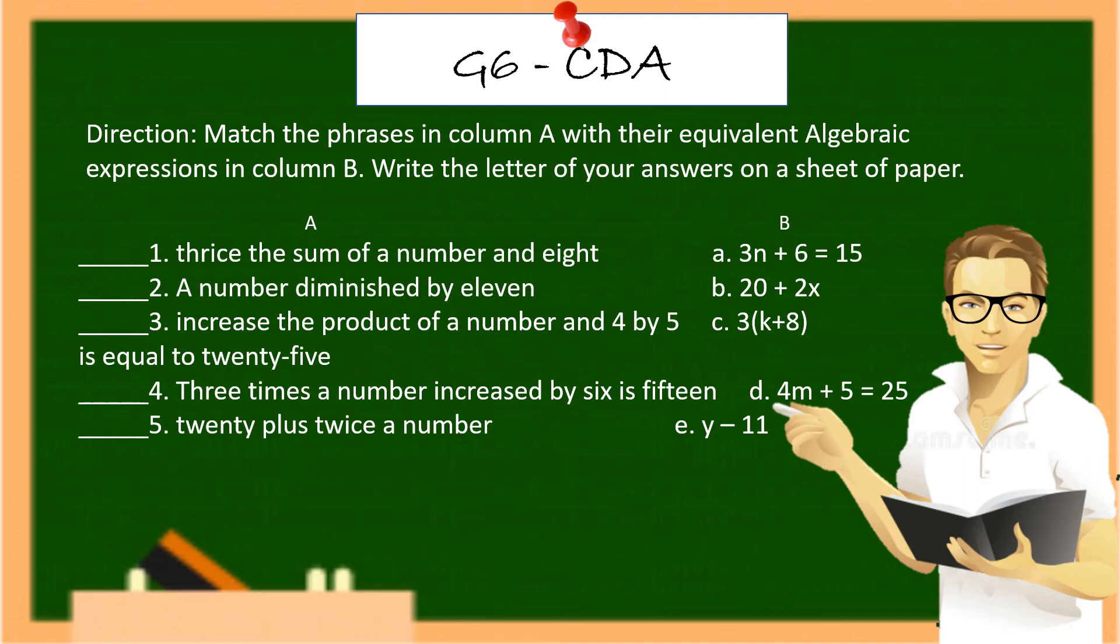In column B, A, 3n plus 6 is equals to 15. B, 20 plus 2x. C, 3 times k plus 8. D, 4m plus 5 is equals to 25. E, y minus 11.